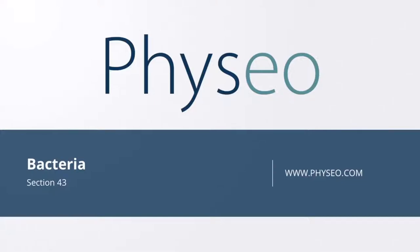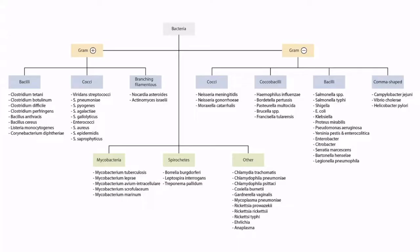Welcome to section 43 of Bacteria. This is our bacteria overview figure, and in this video we'll be discussing Mycobacterium avium intracellulare, or MAC, Mycobacterium scrofulaceum, and Mycobacterium marinum.